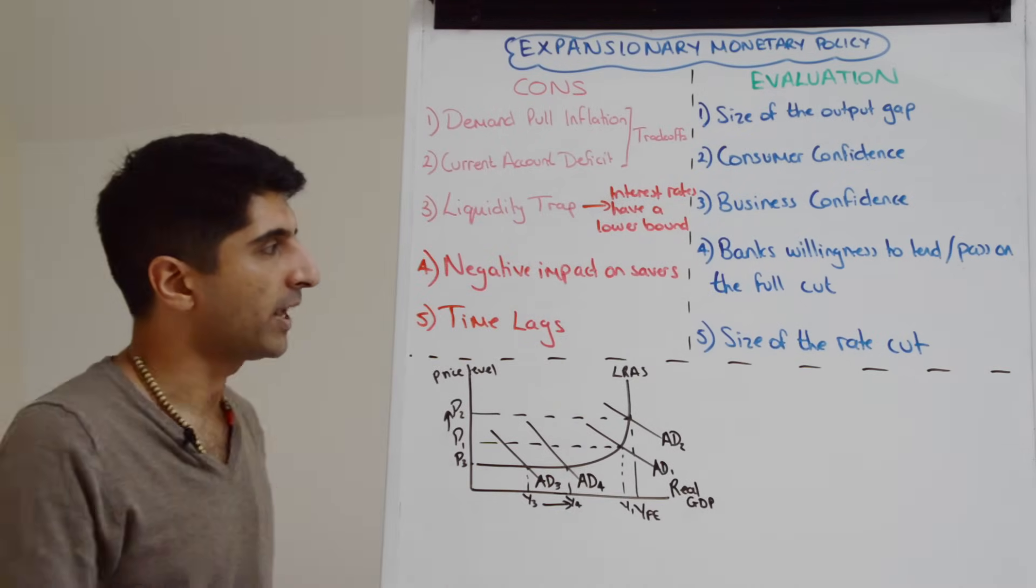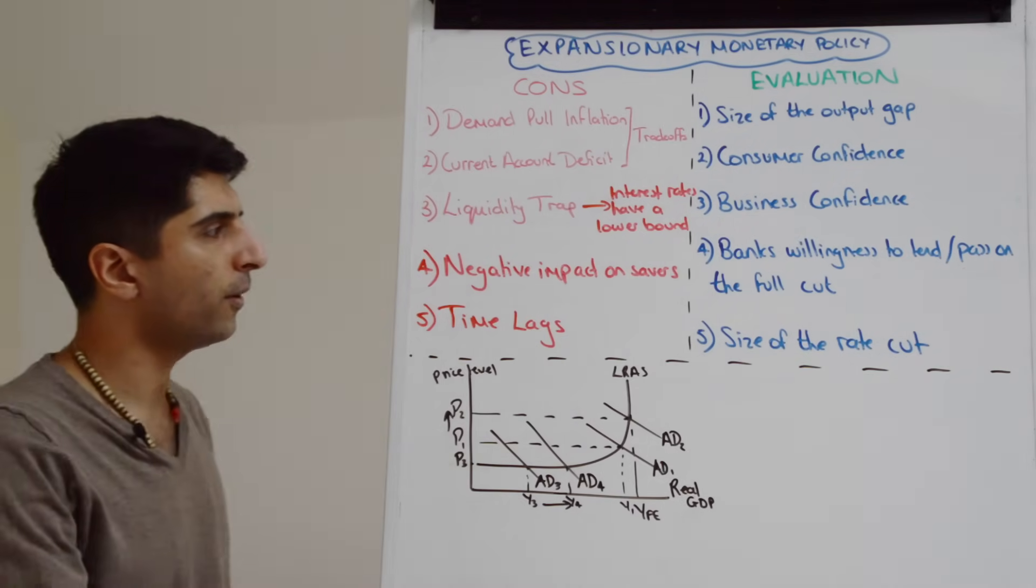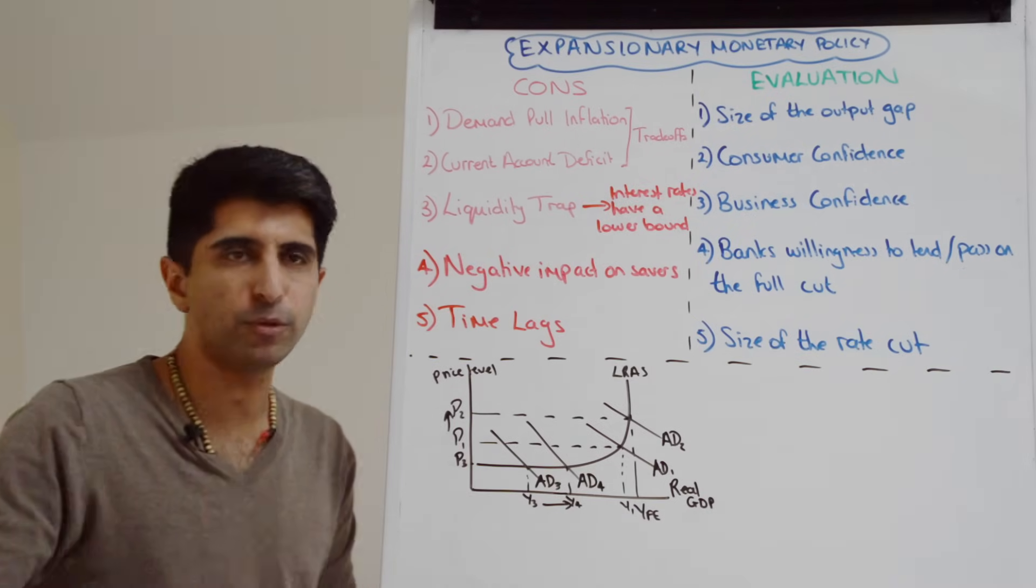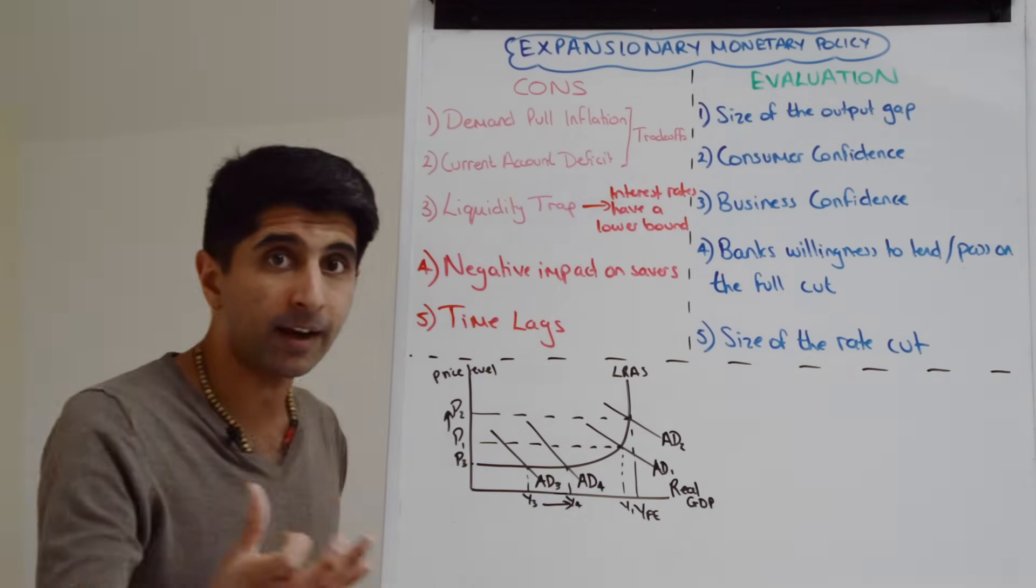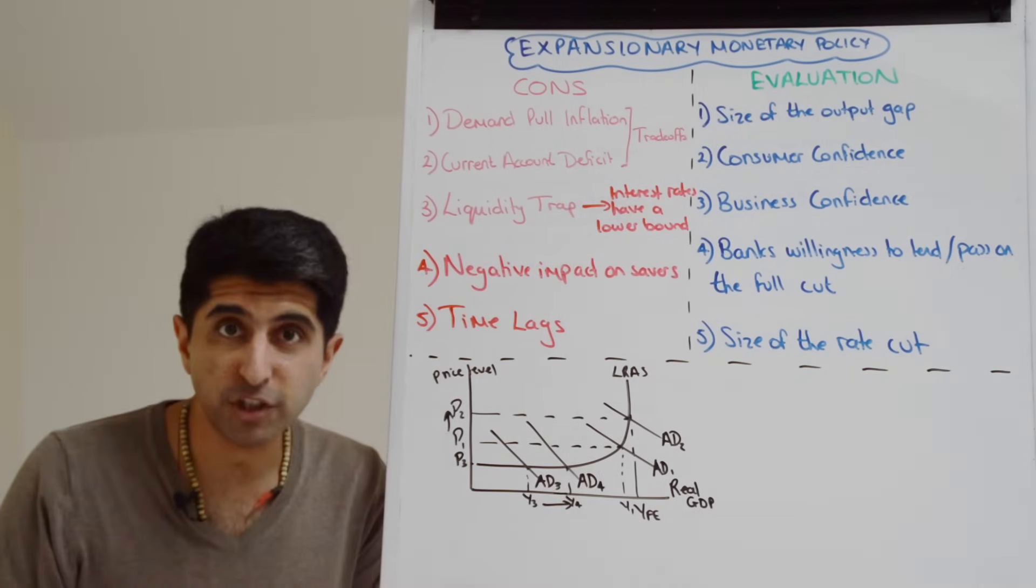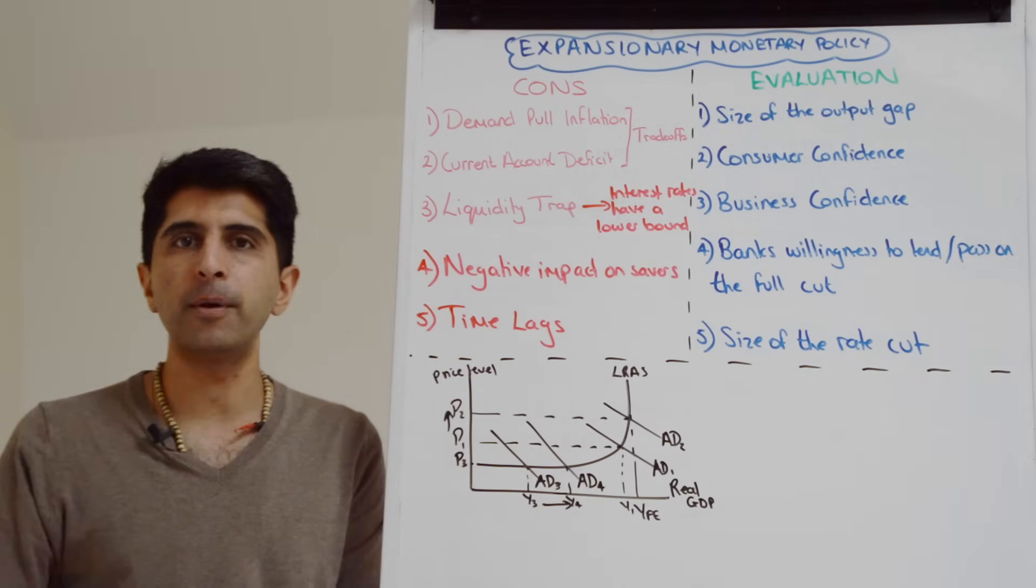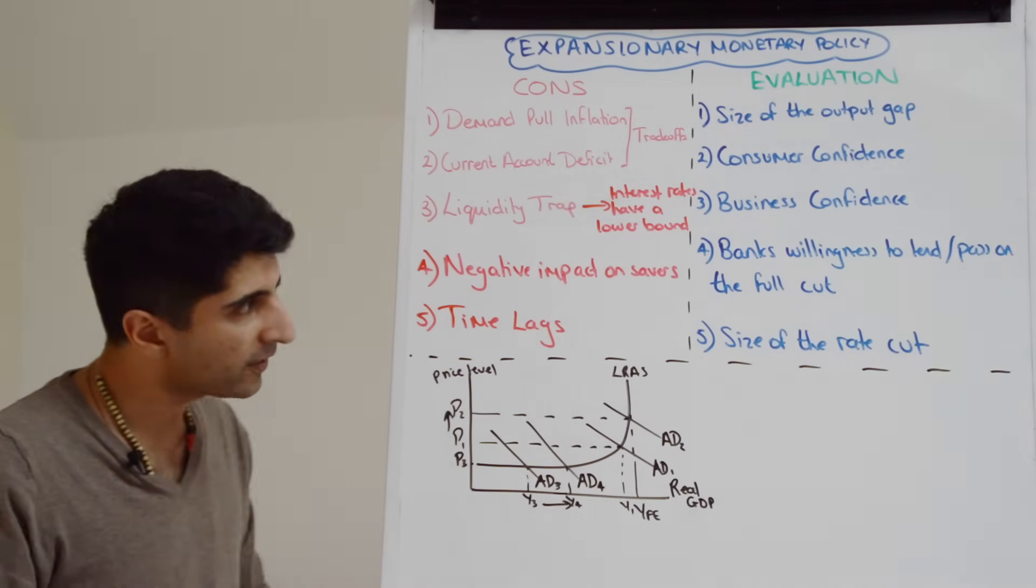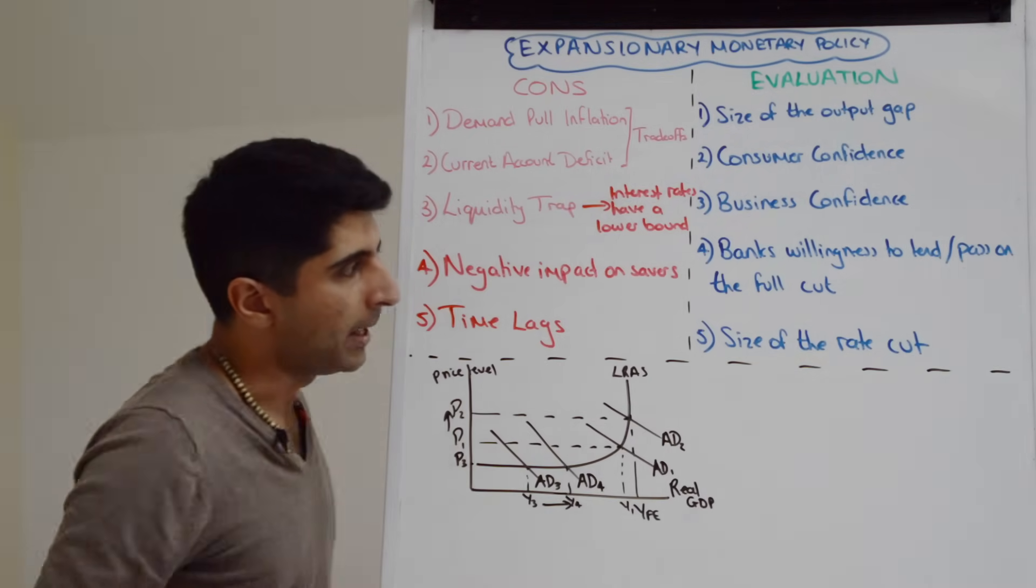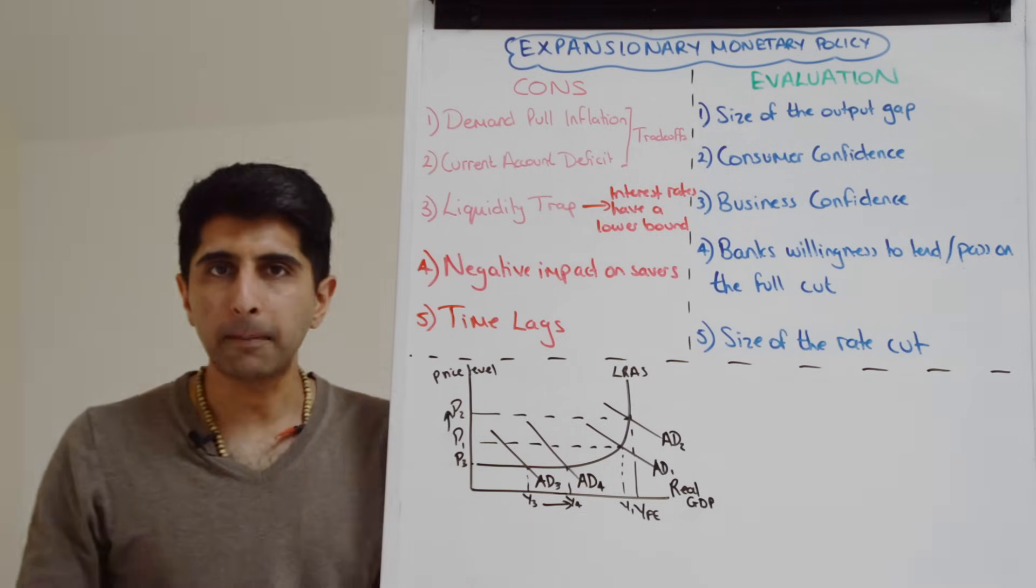And the last thing we can question is the size of the rate cut. If we want expansionary monetary policy to really be effective in boosting aggregate demand, well a bigger cut is more desirable. That makes it much cheaper for consumers and businesses to borrow, can incentivize that borrowing more, and therefore promote consumption and investment significantly.